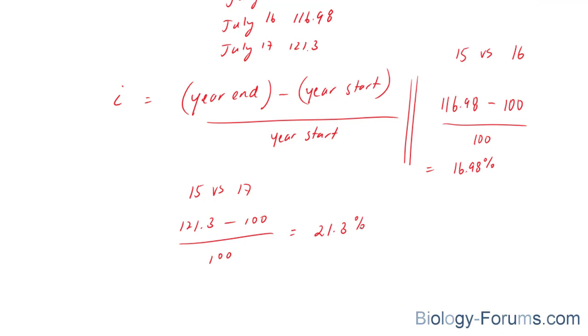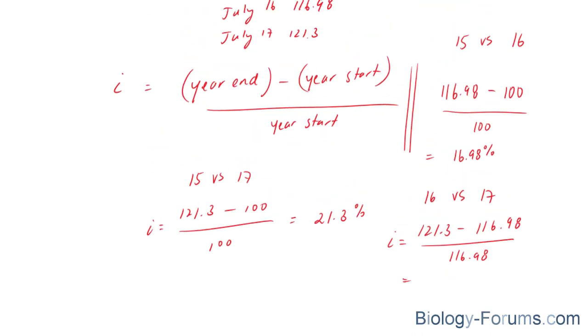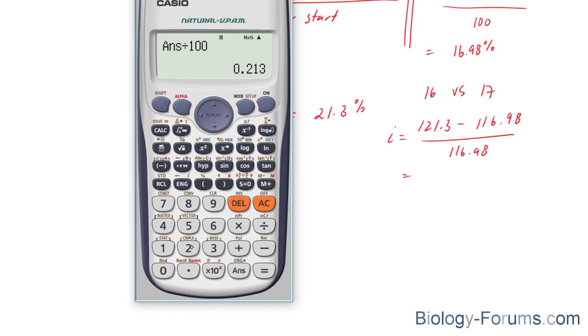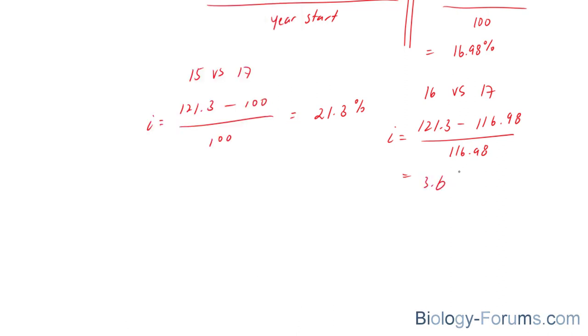And we will compare 2016 to the year 2017 of July. And we have here, the year end is 121.3 minus 116.98, that represents July of 2016, over 116.98, is equal to 121.3 minus 116.98, divided by 116.98. And the inflation for this was only an increase of 3.69%.